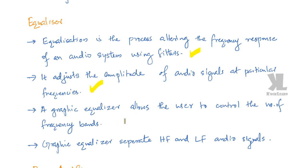The graphic equalizer allows the user to control a number of frequency bands. The entire sound spectrum is divided into bands which the graphic equalizer controls. The graphic equalizer separates the sound signal into higher frequency and lower frequency audio signals.